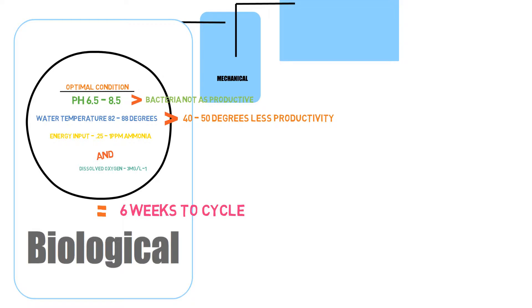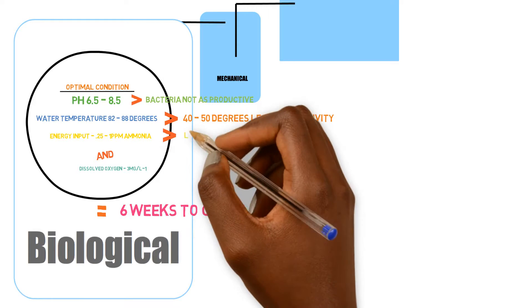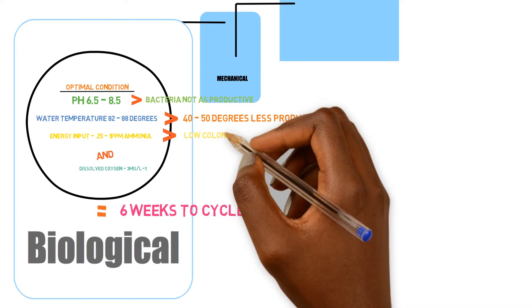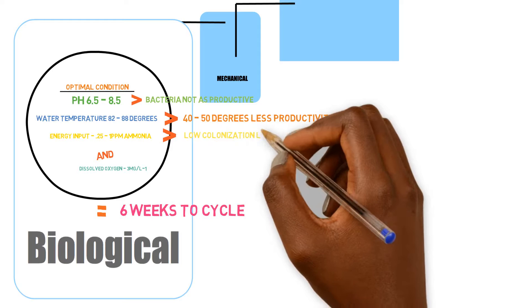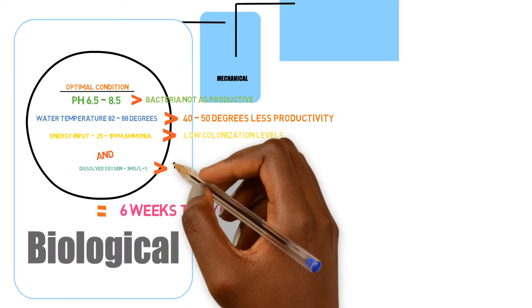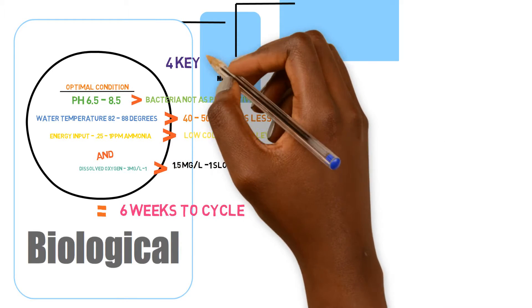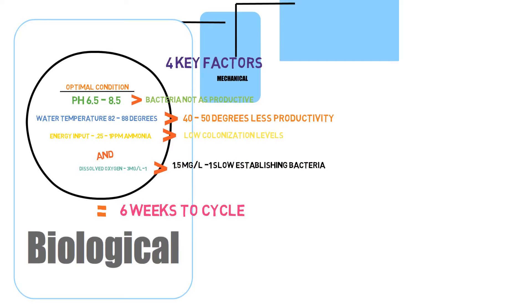So also the feed input, how much feed you're putting into the system. If you're not putting in a lot of feed, then you're not going to have a lot of maturity that's taking place inside the biological filtration. So those are pretty much the three main factors. If you can get them at an optimal or at least a feasible range, then you should have no problem cycling the system within six to eight weeks.